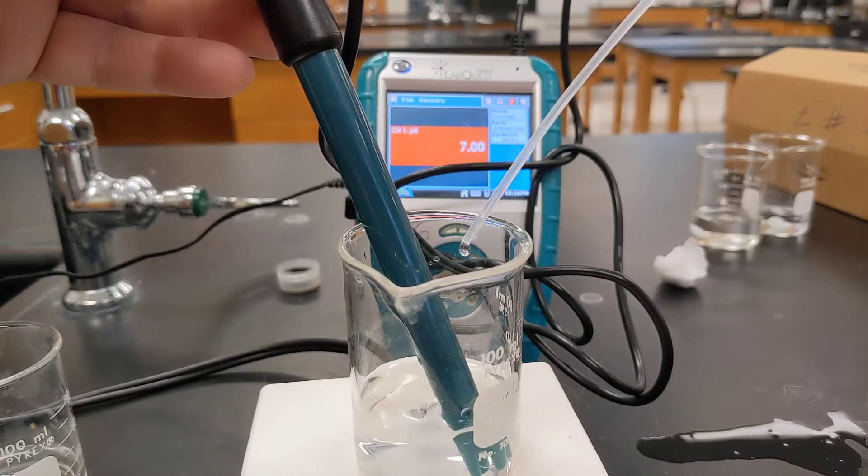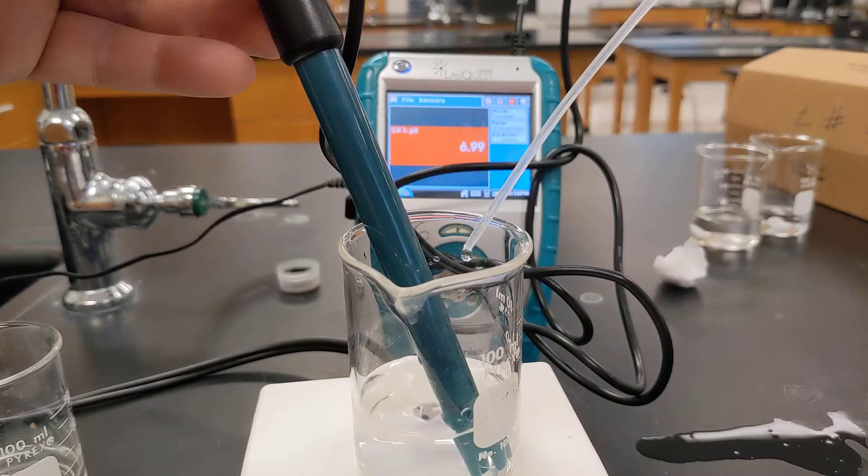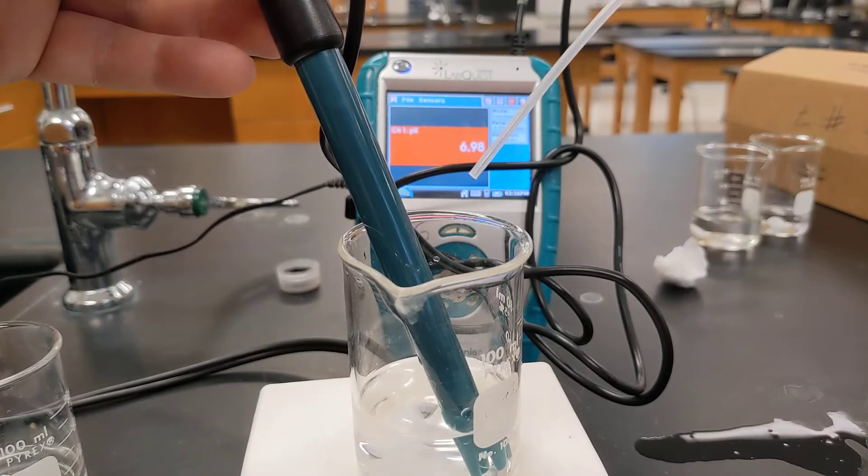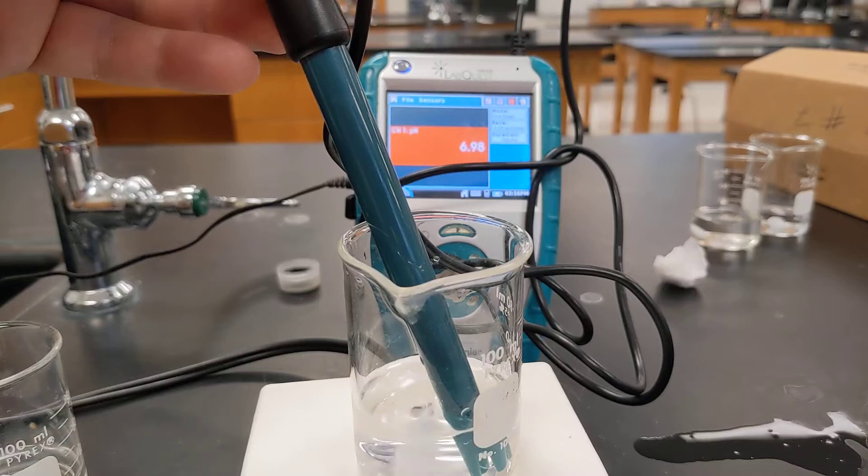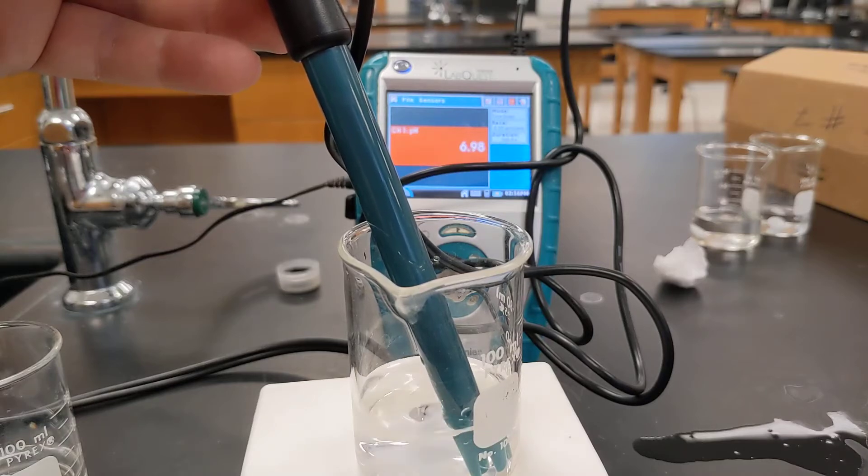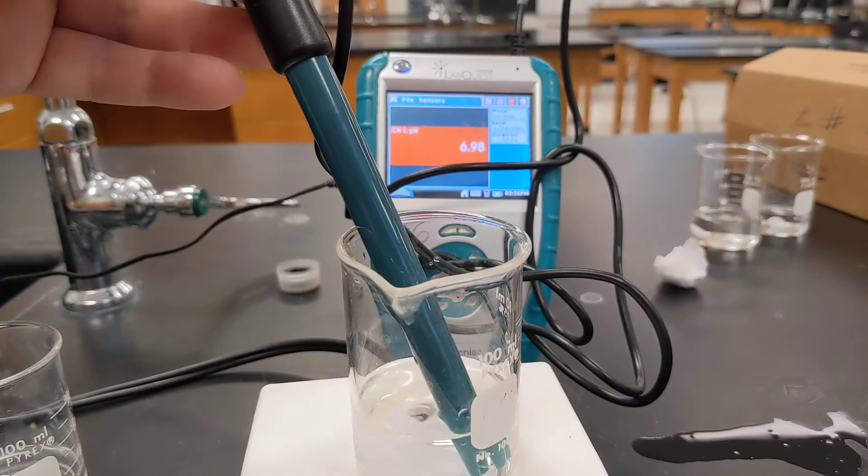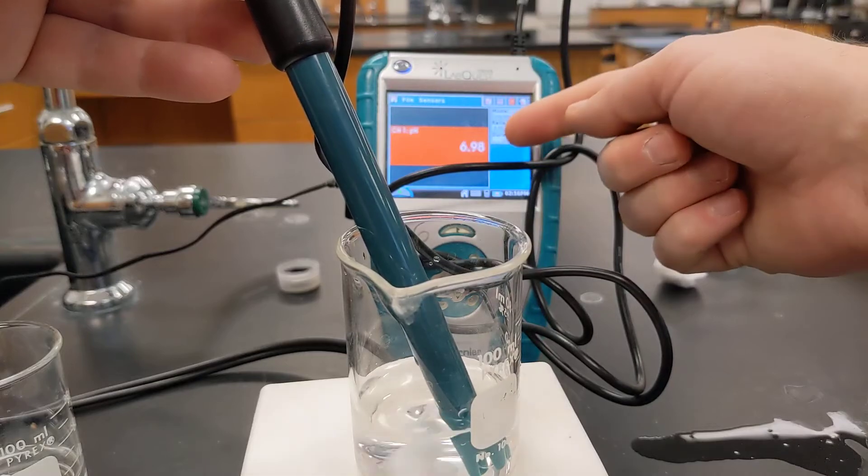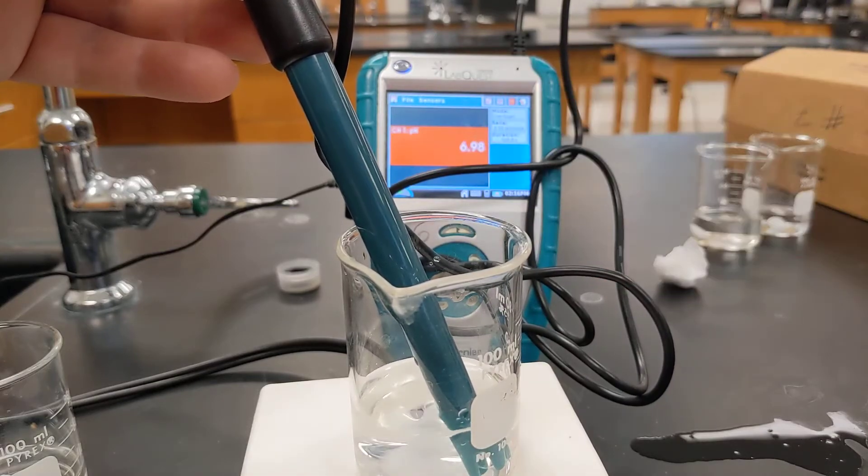Twenty-one, twenty-two, twenty-three, twenty-four, twenty-five, twenty-six, twenty-seven, twenty-eight, twenty-nine, thirty drops of hydrochloric acid, and the pH still six point nine eight. You can see it back here if the camera would focus on that.